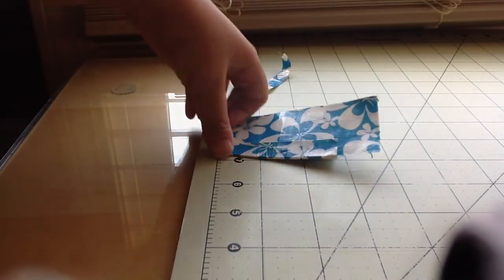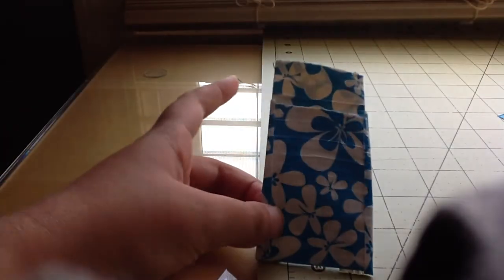Do the same to the other side. What you're going to do is take your flap and fold it over and take a tiny piece of tape and tape it on it.